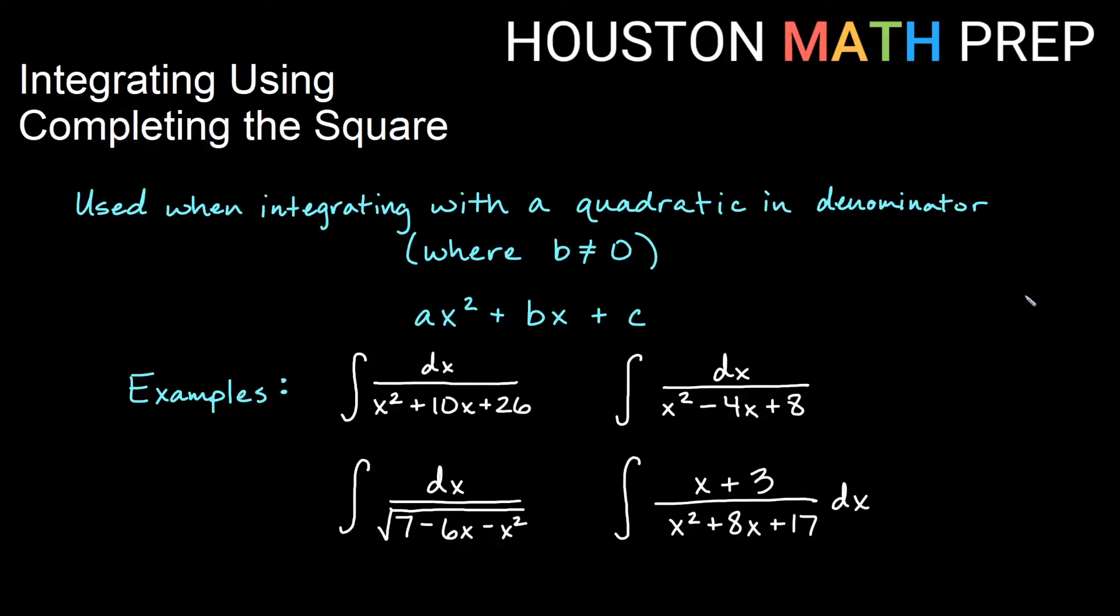Welcome back everyone, Houston Math Prep here with another integration video, this time on integrating using completing the square. This is something that you would use when you have a quadratic polynomial in the denominator of some sort of rational expression, particularly where b is not zero, so you have an x term in a quadratic, and in particular when it is not factorable. If your denominator has a quadratic and it's factorable, you might use partial fraction decomposition. Here we're going to focus on when it is not factorable and when you'll use completing the square.